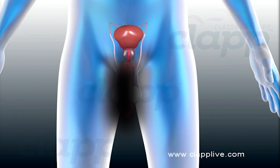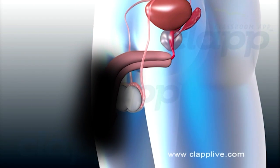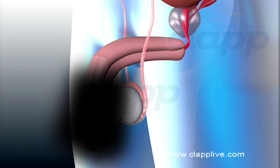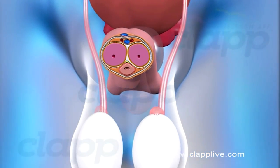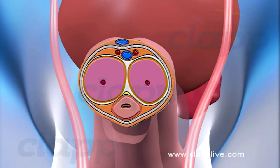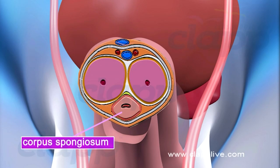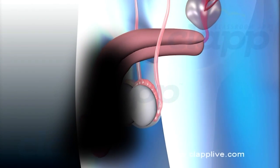The penis is the copulatory organ of the male. It is a cylindrical organ suspended in front of the scrotum. The interior of the penis is formed of three cylindrical cords of erectile spongy tissue. Two of these cords are called corpora cavernosa and are thicker, located on the right and left sides of the penis. The third cord, corpus spongiosum, encloses the urethra. These tissues are rich in blood sinuses but are normally not filled with blood.